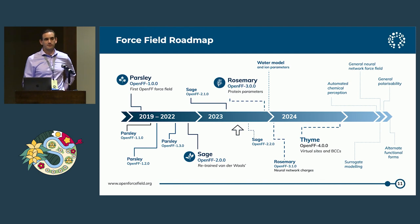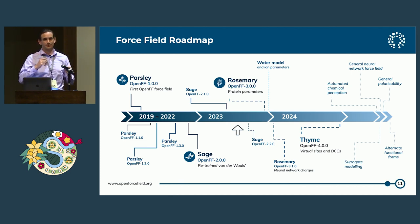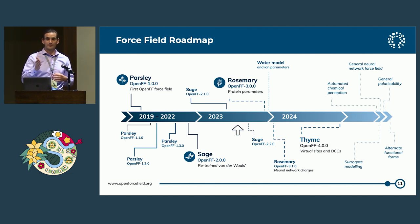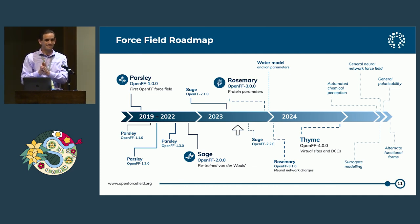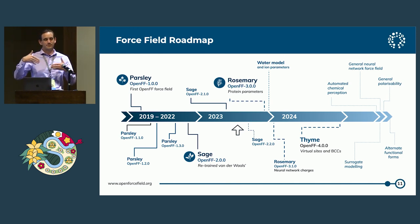To refit the Lennard-Jones terms, you couldn't just use QM. For bonds and angles, you can stretch them, do QM calculations, and see how much they want to return to equilibrium. But for non-bonded terms, it's a lot more complicated. We actually had to get detailed measurements of mixtures — where they take two organic solvents and mix them together and measure the density to five significant figures — and we would do simulations and iteratively tune our parameters to reproduce these known physical measurements.